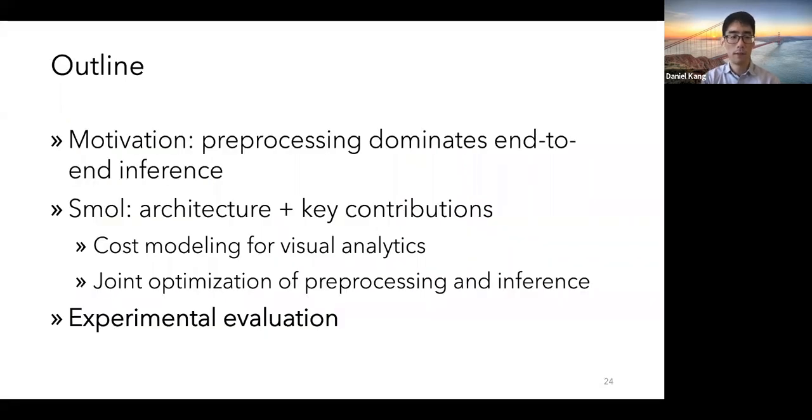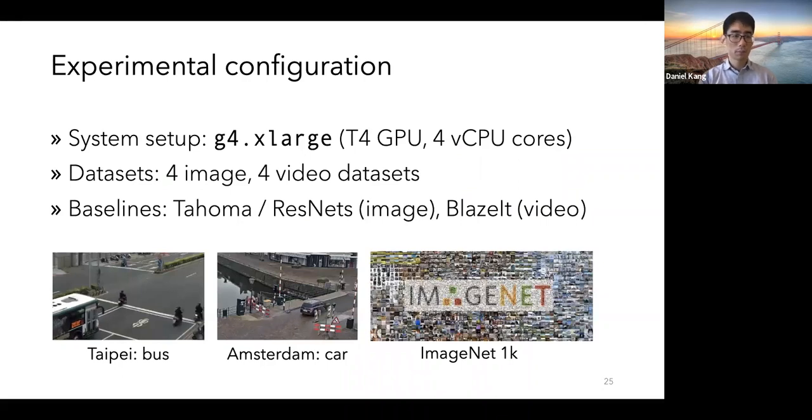Now that I've described how to jointly optimize pre-processing inference, I'll describe our experimental evaluation. We execute on the G4dn.xlarge AWS instance, which has a single T4 GPU and four vCPU cores. In our full paper, we execute on four image and four video datasets, but I'll show one each in this presentation. And for the baselines, we use a previously optimized system, Tahoma, and also ResNets for the image analytics tasks, and the Blazor system for the video analytics tasks.